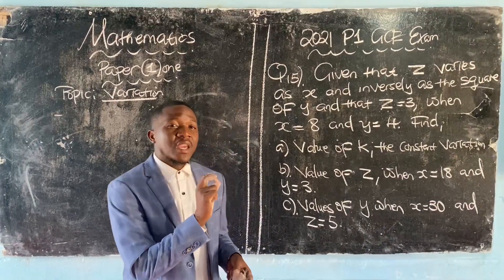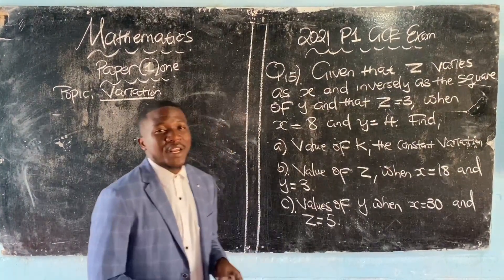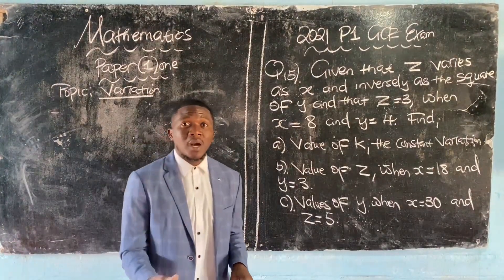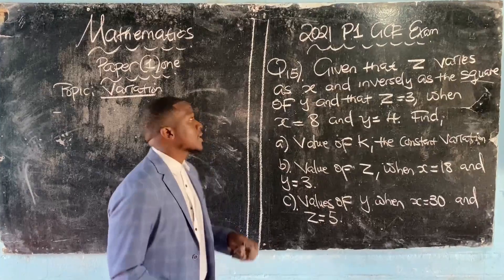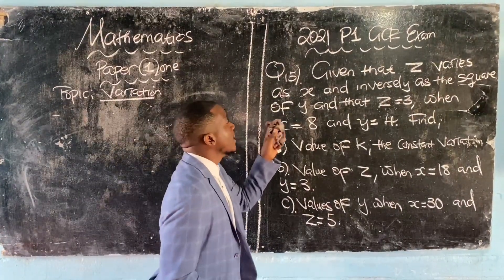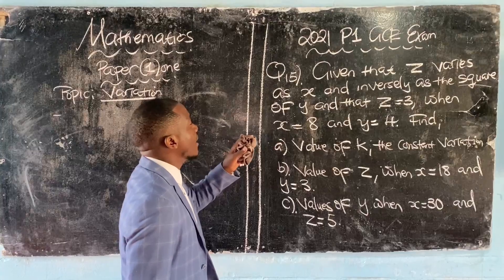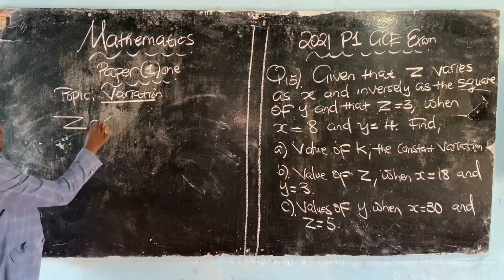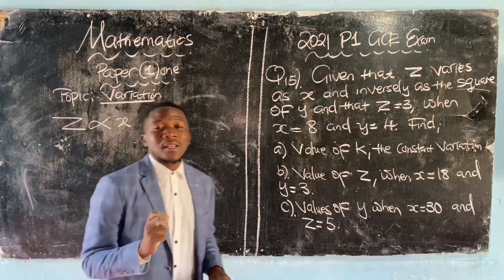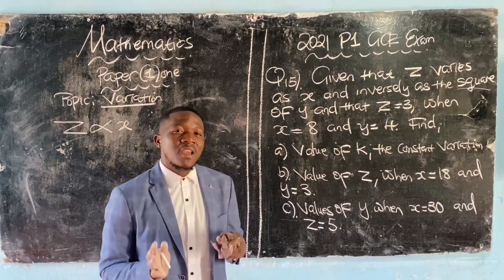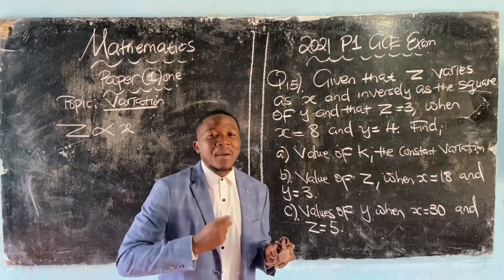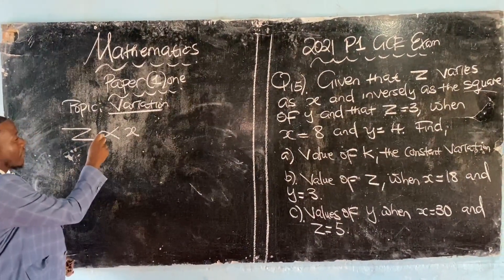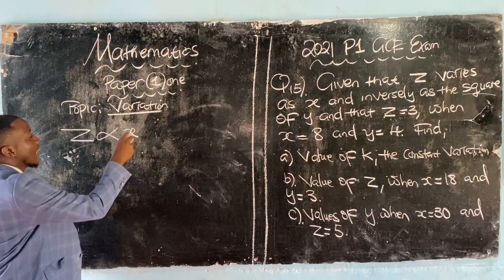We're going to use a 2021 Paper 1 GCE exam in order to prepare adequately for the exam using question 15. It says given that z varies as x. Varies as x is as good as saying varies directly as. So when you write z, you put the variation symbol, then x.